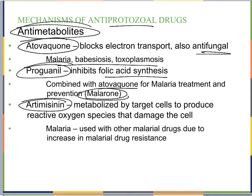Artemisinin is another anti-metabolite. It's metabolized by target cells to produce reactive oxygen species (ROS), which damage the cells. When this antiprotozoal drug is metabolized, it produces ROS that will damage the protozoal cell. It's used for malaria along with other malarial drugs, helping to increase their usefulness since we see a lot of drug resistance in malaria treatments.